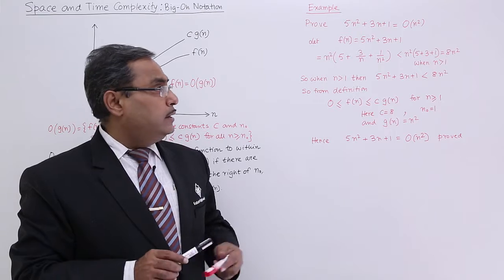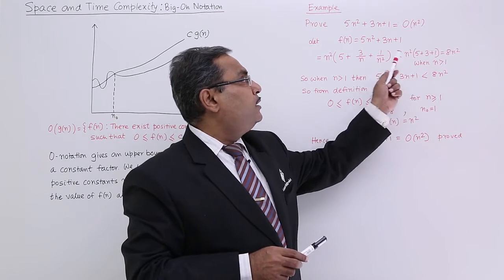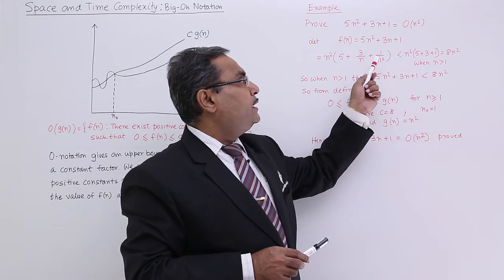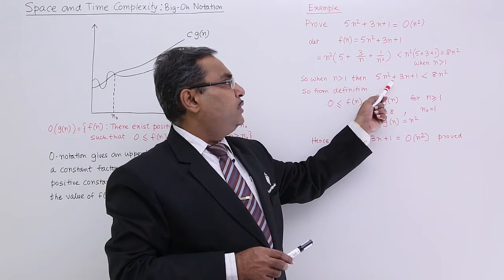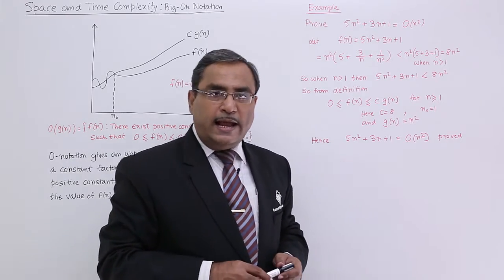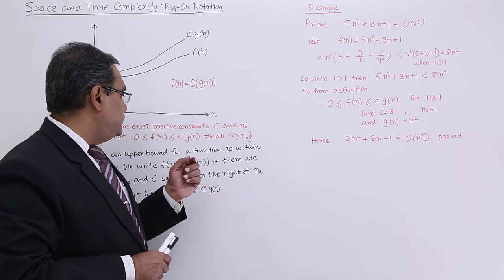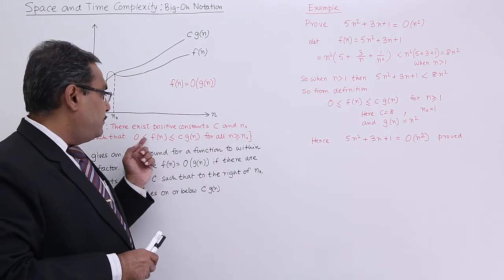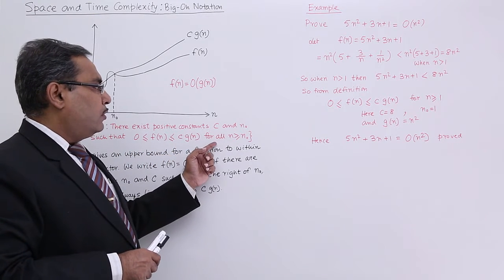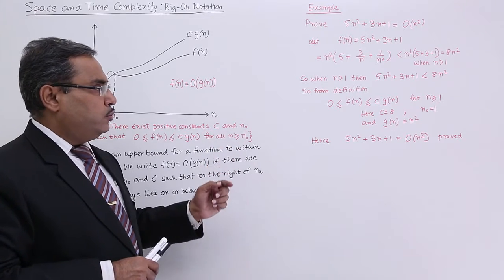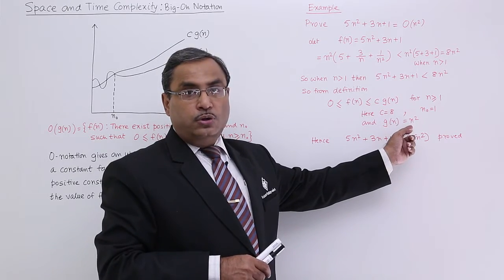When n is greater than 1, this value will be greater compared to the original terms, so 5n² + 3n + 1 is less than 8n². From the definition: 0 ≤ f(n) ≤ c·g(n) for all n ≥ 1. Here c = 8, n₀ = 1, and g(n) = n².